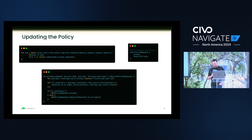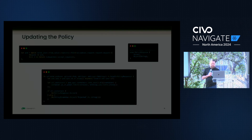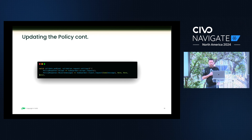For validation on that particular pod, you pull up all the containers and traverse down to that particular container spec. It will do a check whether it's valid or not and the comparison comes back. We have two responses: accept, and for rejection I wanted to make sure I passed some type of message that will log why the request was rejected.